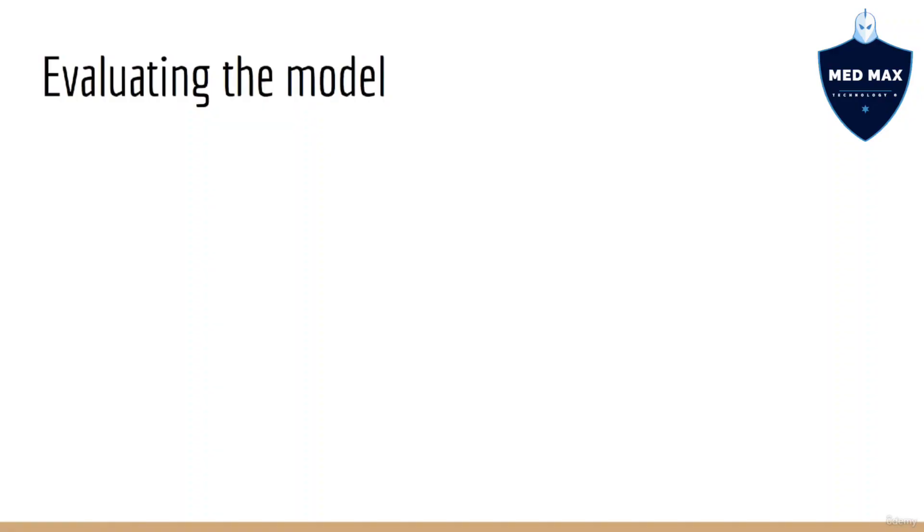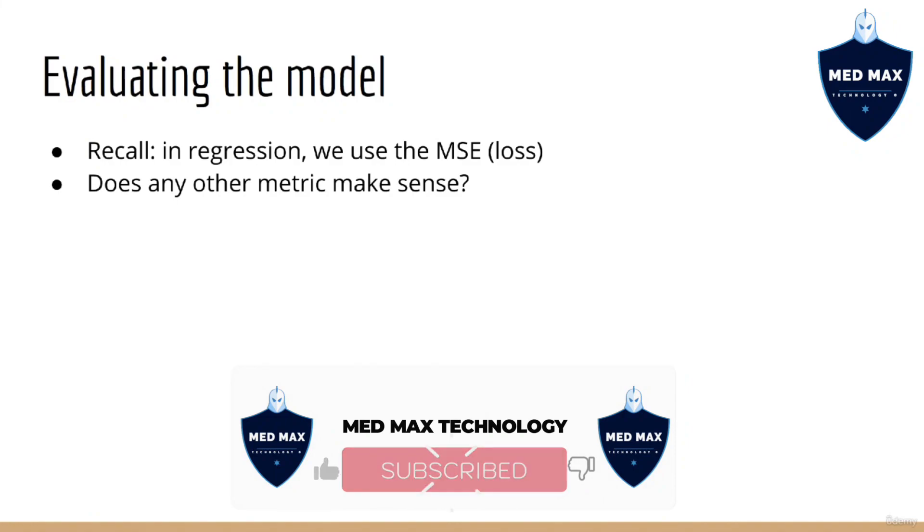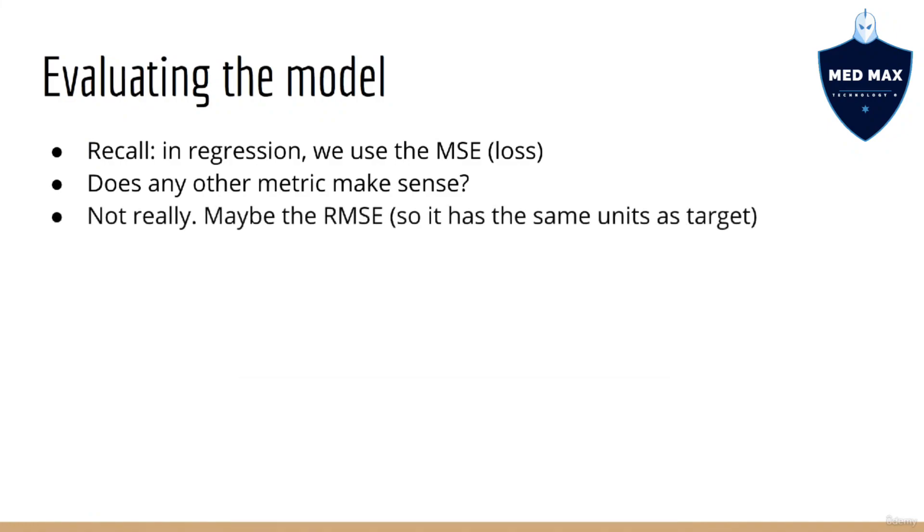The last thing we're going to do in our script is evaluate the model. This is different in classification compared to regression. In regression, we use the mean squared error as our loss, but we also use it as our evaluation metric. It kind of makes sense since I don't think any other metric would be significantly more advantageous. The mean squared error is kind of a natural way to look at the regression error. Alternatively, you could look at the root mean squared error, which is just the square root of the MSE so that it's in the same units as the target. But still, taking the square root is kind of a trivial transformation.